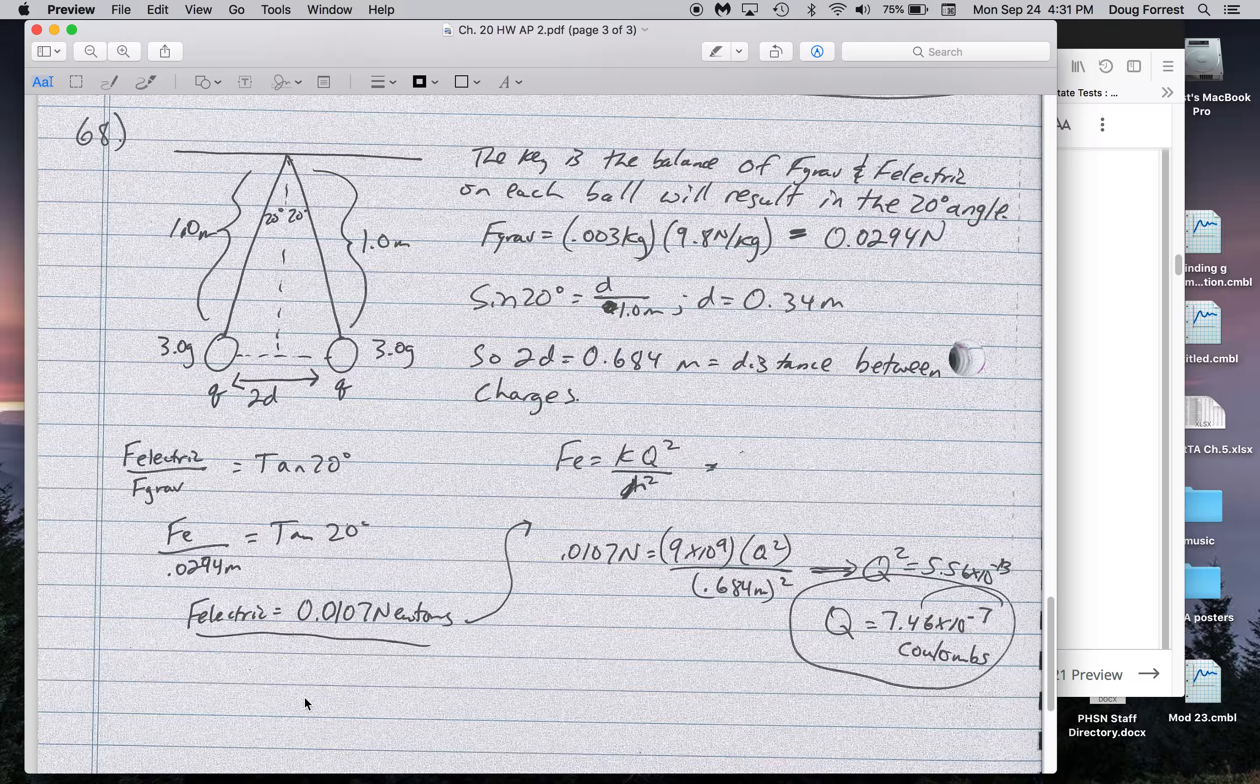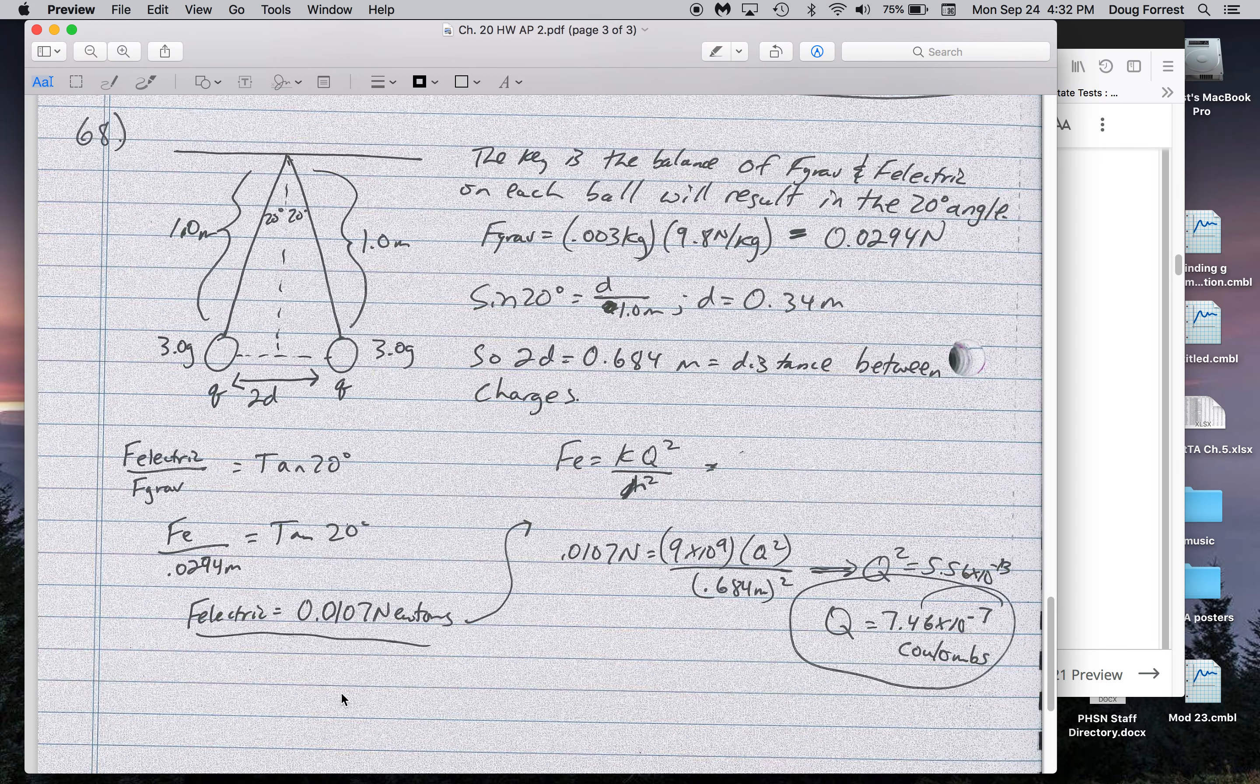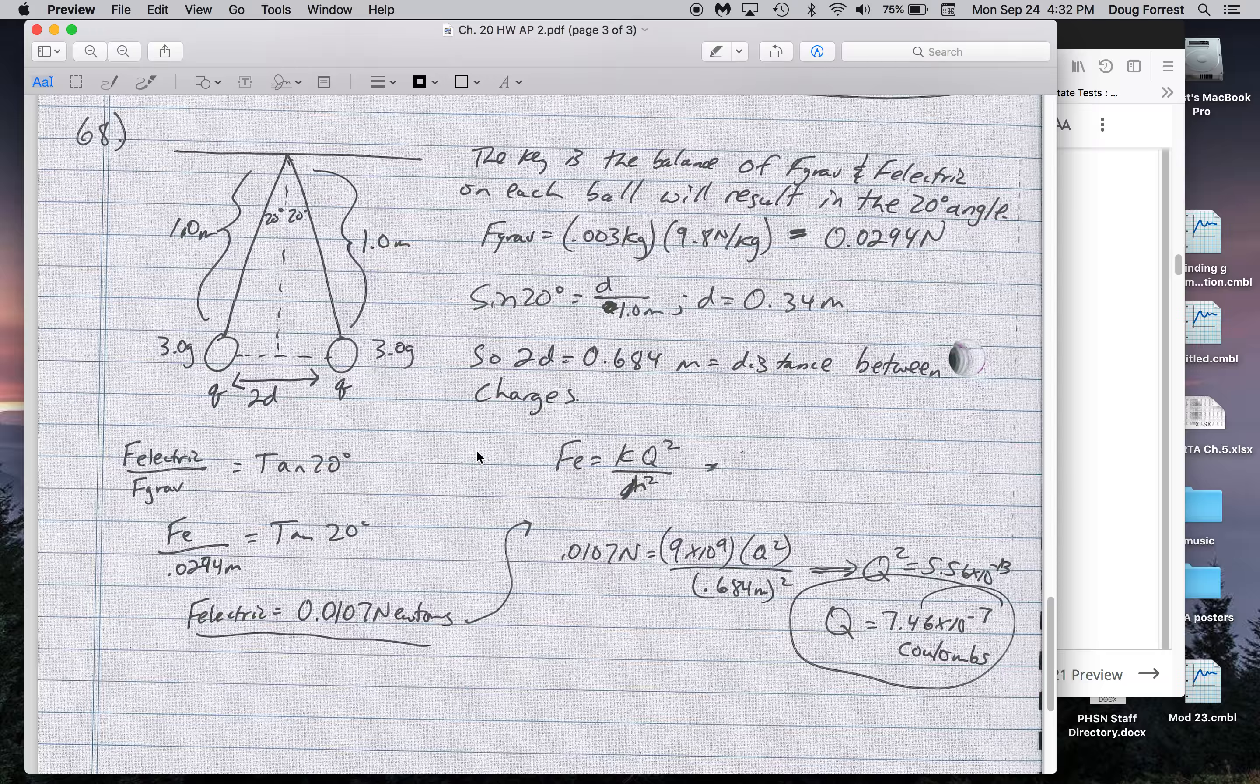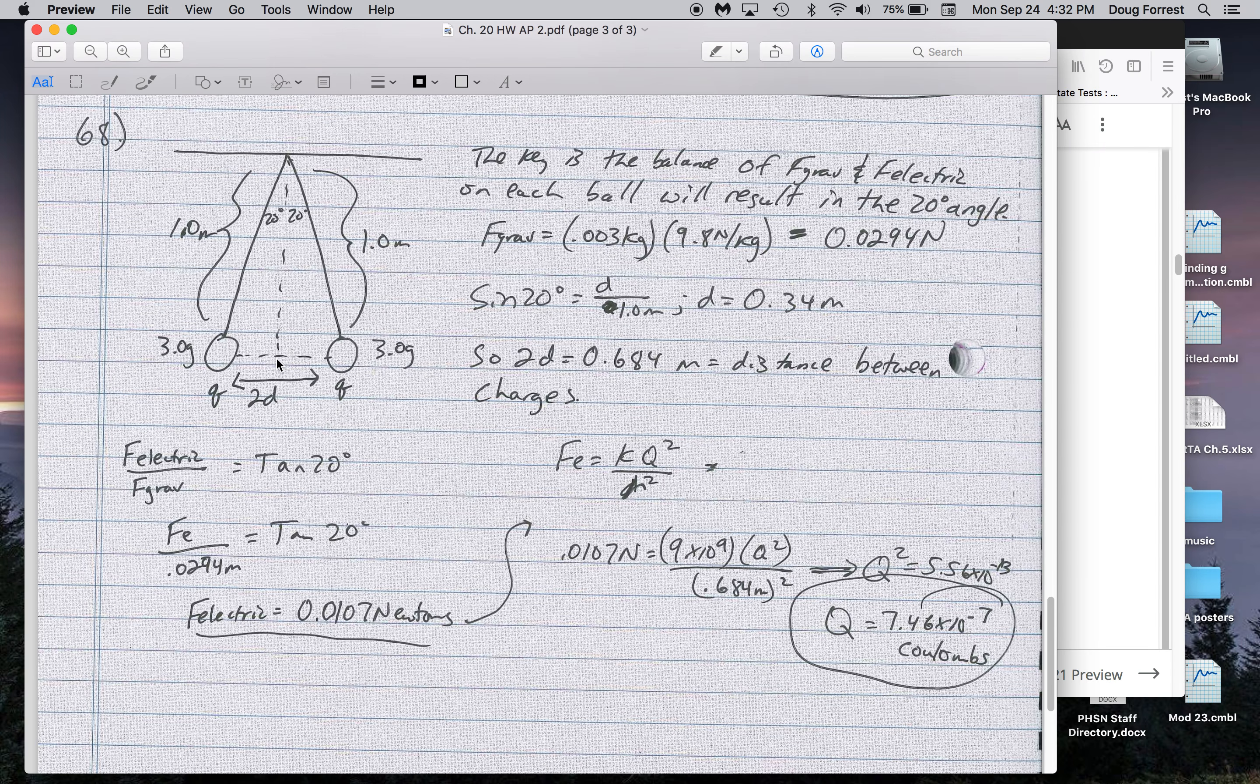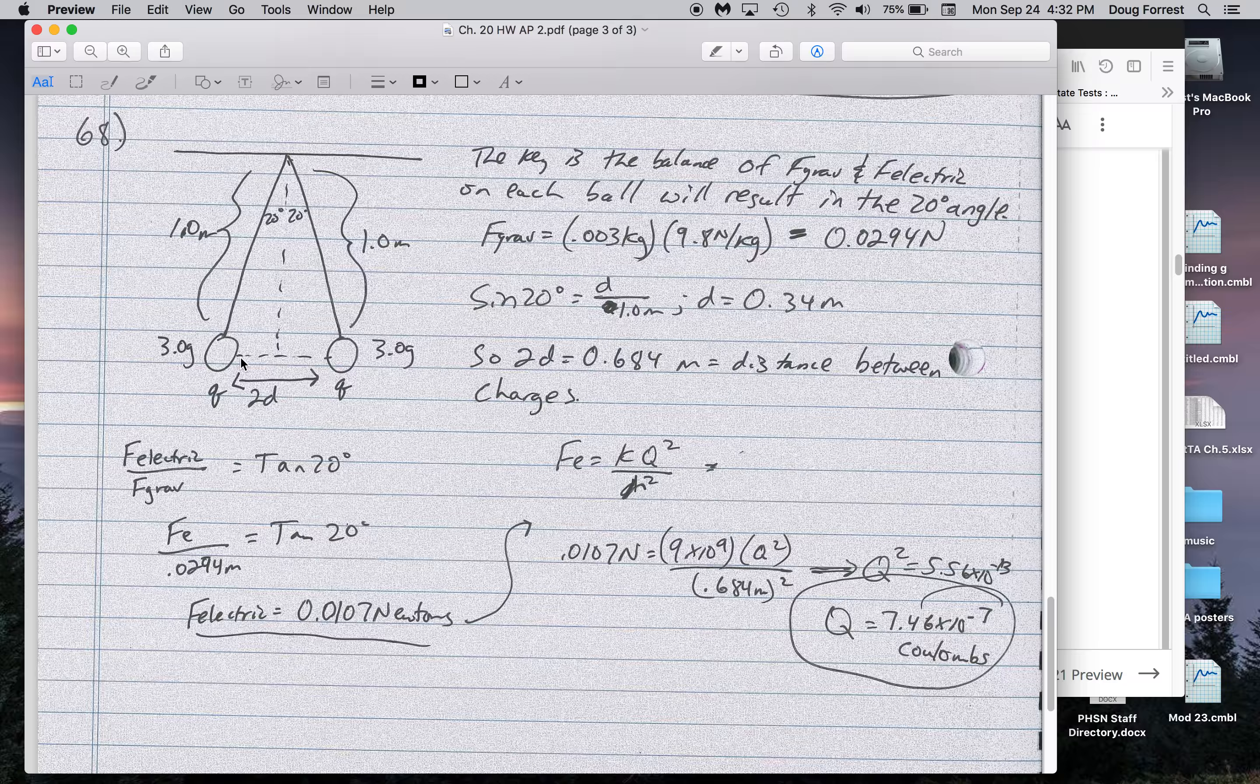So again, we can get the gravitational force to help us understand the electric force, which was 0.0107 Newtons. So in this case then, we can also use trig and the known length of these strings to determine the distance between these two charges. I get 0.034 meters from this sphere to the middle. There's two spheres, so that's another 0.034 meters. So it comes up to 0.068 meters is the distance between the charges.